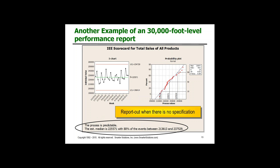Now what happens if you don't have a specification? Well, if you've gone through Lean Six Sigma training, they'll often say you've got to establish something so you can calculate your capability. What I'm suggesting is: if you don't have a specification, don't force it. Report out the median value and 80% frequency of occurrence. You can get those values quite easily from a probability plot with continuous data — you come off the vertical axis where you've got 10, 50, and 90. 90 minus 10 is obviously 80.